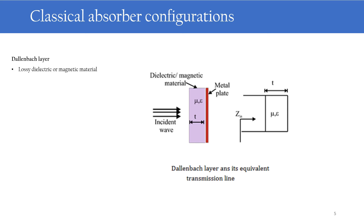Next is the Dallenbach layer. It consists of a homogeneous low-epsilon dielectric or magnetic material backed by a metal plate. This is the equivalent transmission line model. Based on this, if we can properly choose the electromagnetic parameters of the dielectric or magnetic material, it can provide absorption characteristics in a narrow band frequency range. The structure bandwidth can be enhanced to a wider range by using multiple layers of dielectric structures.